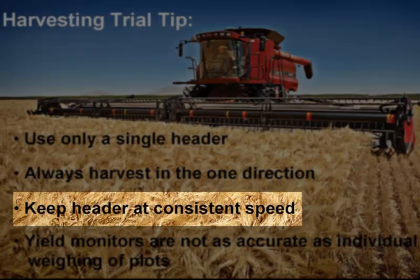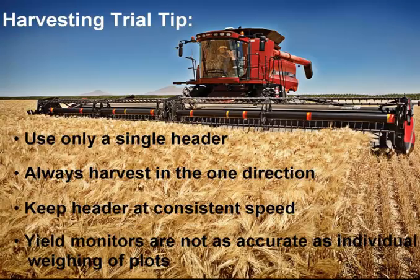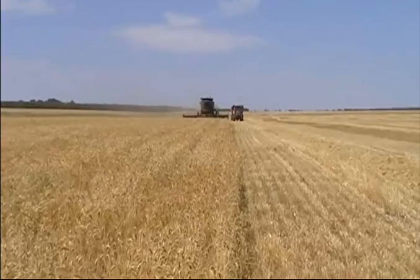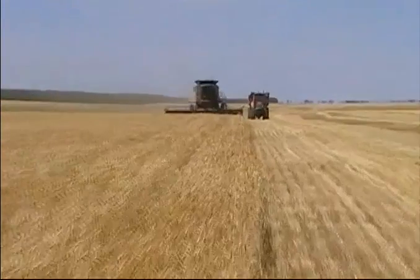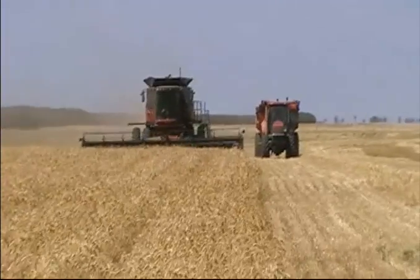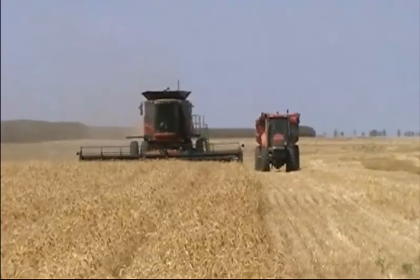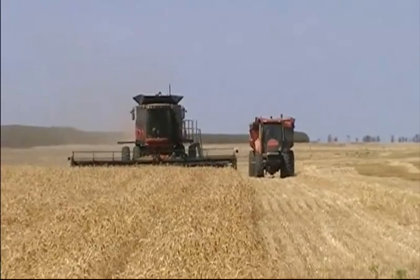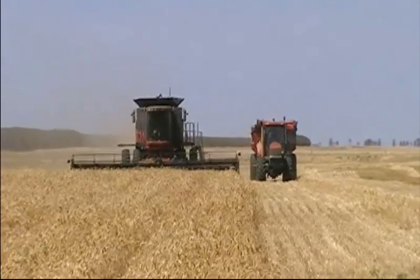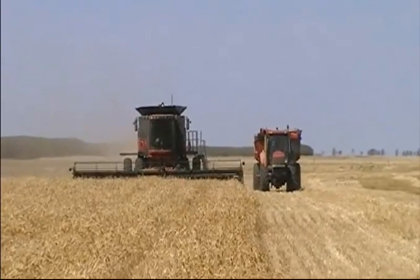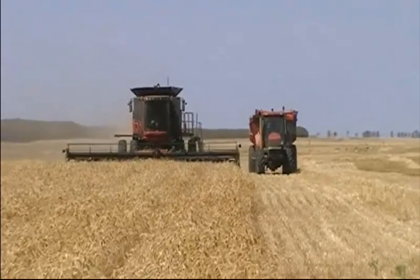It's also important to keep your header moving at a constant speed while in the trial zone. Pausing the header's motion — for example, waiting for a chaser bin or a blockage — can easily distort yield data, causing irregularities in the actual recorded yield levels.